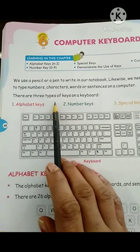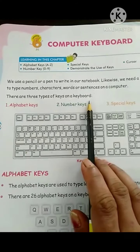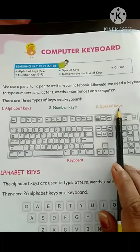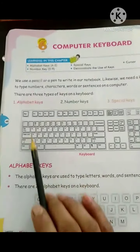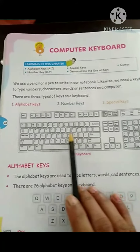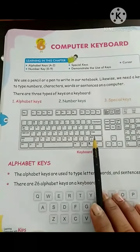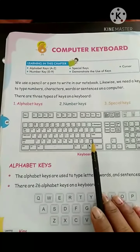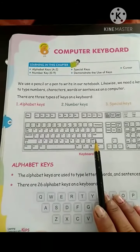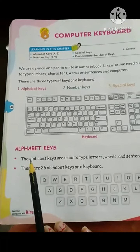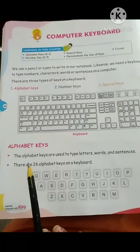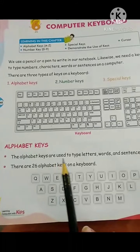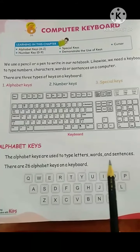There are three types of keys on a keyboard: alphabet keys, number keys, and special keys. You can see one keyboard with many keys on it. All keys have a special function. First of all, we start from alphabet keys. Alphabet keys means A to Z. The alphabet keys are used to type letters, words, and sentences.